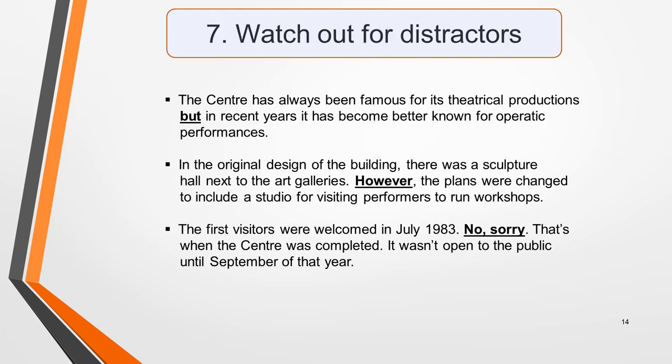The examiners will try to catch you out with distractors. A distractor is a word or phrase that changes or corrects the original piece of information given, so you may be given an answer and then have it taken away again. Here are some sample sentences containing distractors: 'The centre has always been famous for its theatrical performances, but in recent years it has become better known for operatic performances.' 'In the original design of the building there was a sculpture hall next to the art galleries. However, the plans were changed to include a studio for visiting performers to run workshops.' 'The first visitors were welcomed in July 1983. No, sorry, that was when the centre was completed. It wasn't open to the public until September of that year.' The use of but and however are particularly common distractors, but be alert for many different words and phrases that can change or correct information.